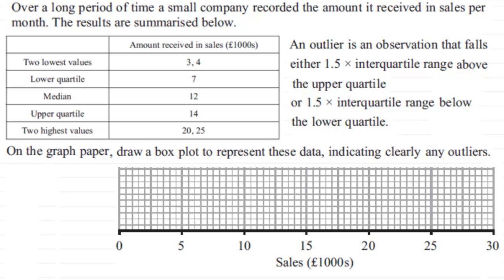Welcome back. We've got to draw a box plot for this summary data. First of all, I'd want to check the median — the median is 12 — so I'd put a line in at the value of 12. It's going up in steps of two, so draw a line down there at 12.